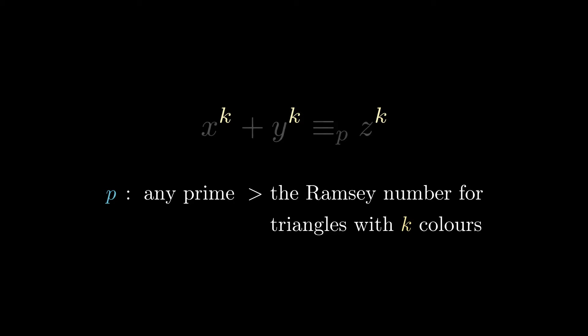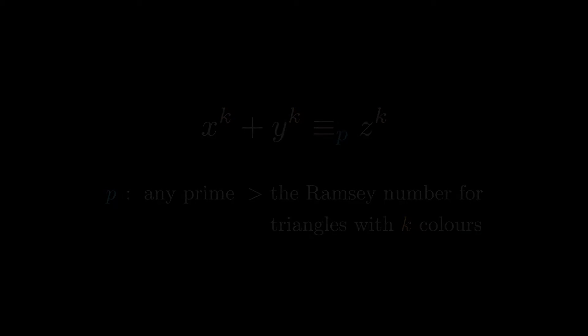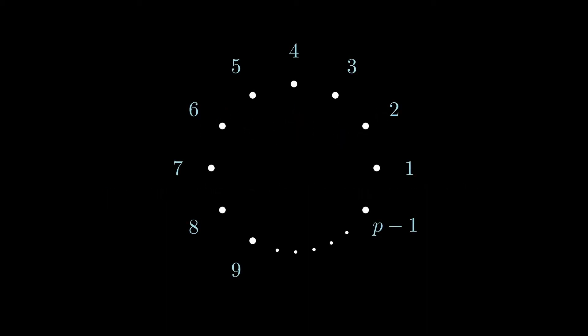Armed with all of this information, we arrive at Shor's conclusion. To break Fermat's conjecture for kth powers in modular arithmetic, we'll choose k colors, and select any prime number that is larger than the Ramsey threshold for k colors and monochromatic triangles. Now take the integers between 1 and P-1, and find a primitive root U.